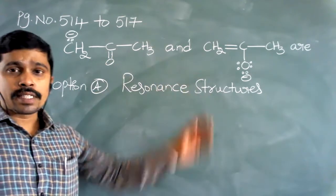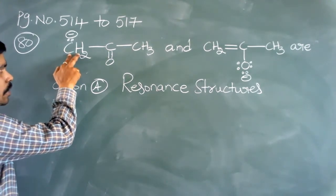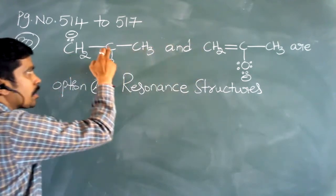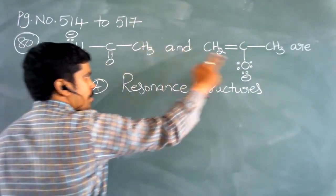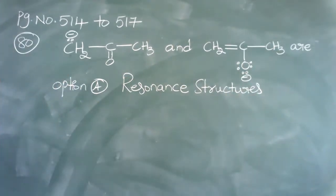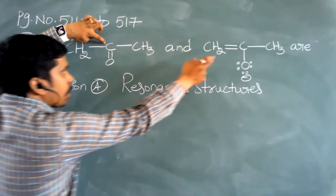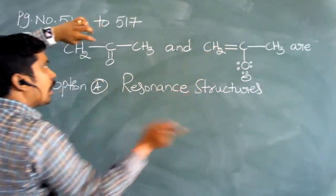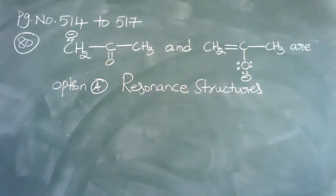Resonance structures are the structures of the same species which differ in the position of bonds but not in the position of atoms. Here the position of atoms — CH2, carbon, oxygen, carbon and hydrogens — remain the same in both structures. Only the position of bonds changes: here a single bond exists between CH2 and C, but in the other structure a double bond is there. Between carbon and oxygen, the double bond becomes a single bond.